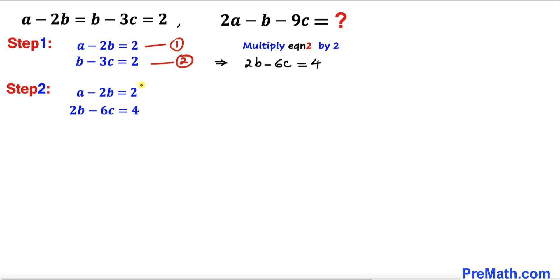Here in this next step, I have copied down equation 1 over here and this next equation right up here. Now let's go ahead and add these two equations. If we add them, we can see this negative 2b and 2b, they are gone, so we ended up with a minus 6c equals 6.